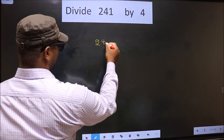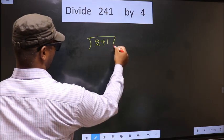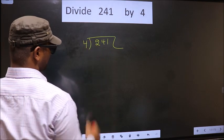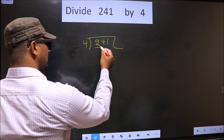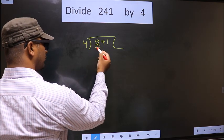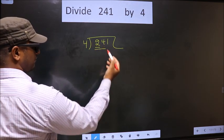That is 241, 4. Okay. Next. Now, here first number is 2, 2 smaller than 4. So, we take two numbers that is 24.